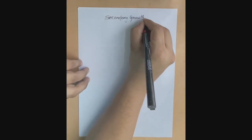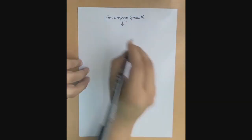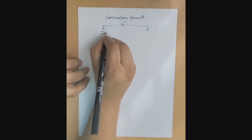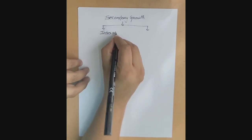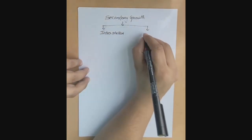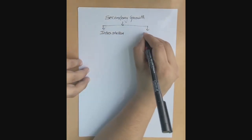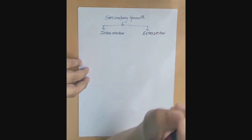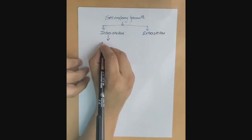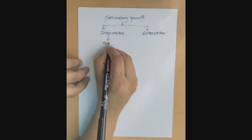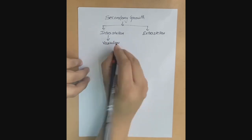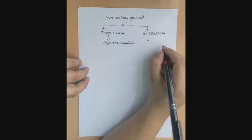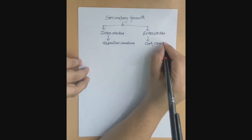If we talk about secondary growth, we have two different types: one is intracellular secondary growth and another is extracellular secondary growth. This intracellular secondary growth is because of vascular cambium, and the extracellular secondary growth is because of the cork cambium.